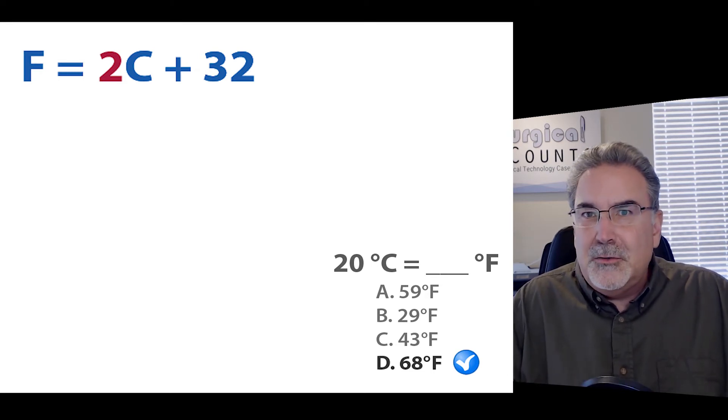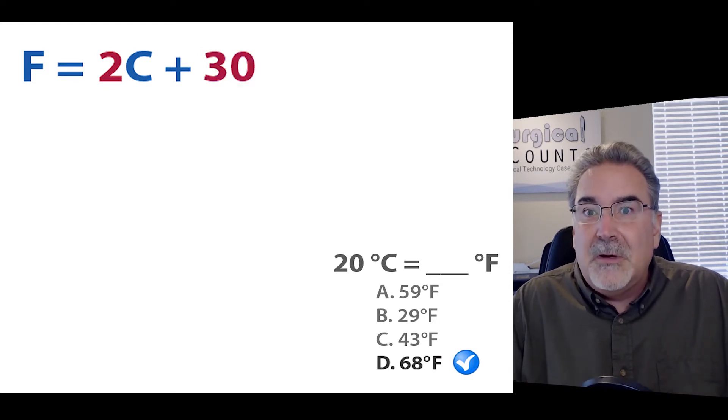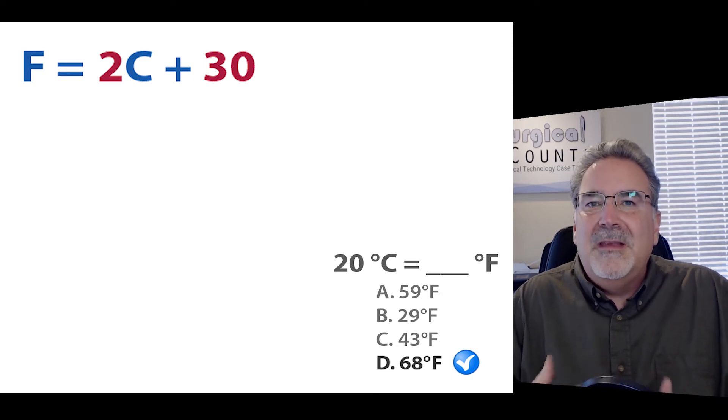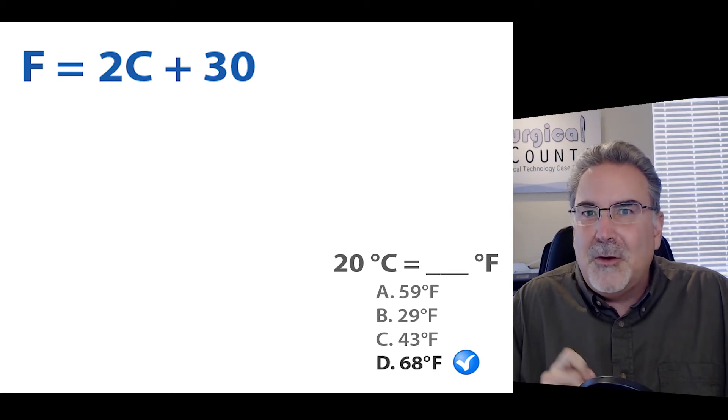And 32 is almost 30. So we can swap out 30 for 32, and we get F equals 2C plus 30. And with this equation, the math is a whole lot easier to do in your head. So let's try it out.